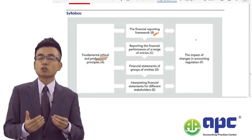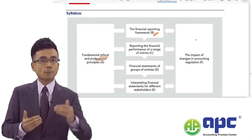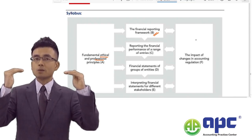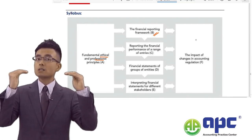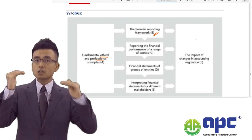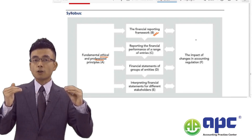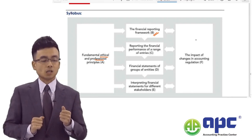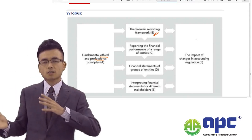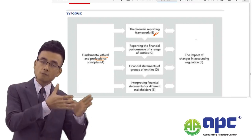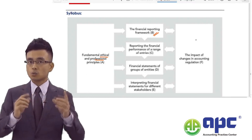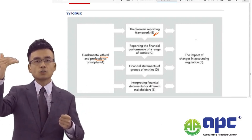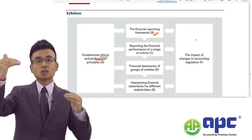For example, in relation to PPE revaluation: we debit the PPE cost account and credit revaluation reserve (OCI / other comprehensive income). At the same time, deferred tax adjustments are required — instead of debiting income tax expense, we debit OCI and credit the deferred tax liability. We debit OCI rather than income tax expense because the tax effect relates to the PPE revaluation, which was recognised in revaluation reserve, so we match the tax effect there too.